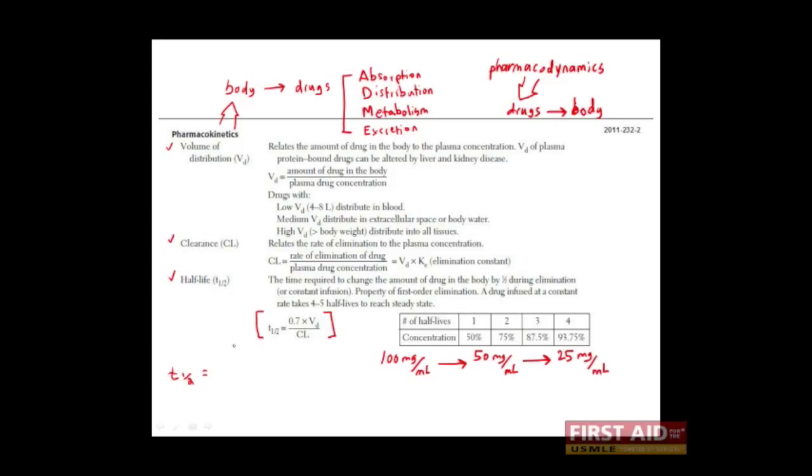Again, the half-life is equal to a coefficient, which has no units, times the volume of distribution, which we know is given in volume, divided by the clearance, which is given in volume over unit time. Simplifying, we see that this equation for half-life indeed results in the correct units, that is, time.